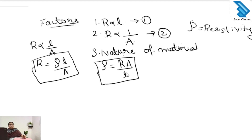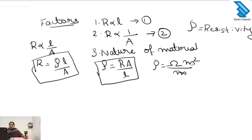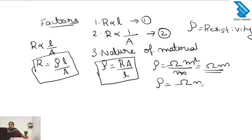Next we have to find the unit of resistivity. The unit of resistance is ohm, the unit of area of cross section is meter squared, and the unit of length is meter. After cancelling, we get ohm meter as the unit of resistivity.